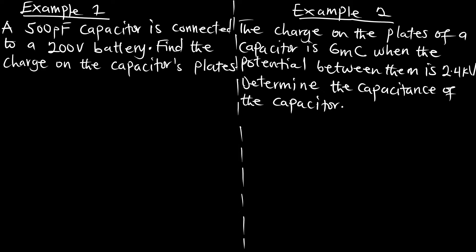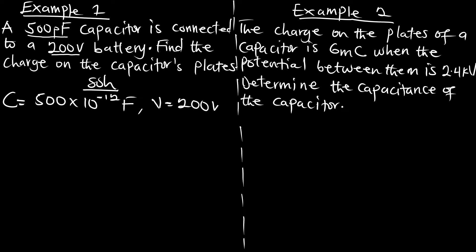Example one: A 500 picofarad capacitor is connected to a 200-volt battery. Find the charge on the capacitor's plates. From the question, our capacitance C is 500 picofarads — pico is the prefix for 10 to the power of negative 12 farads — and our voltage V is 200 volts.